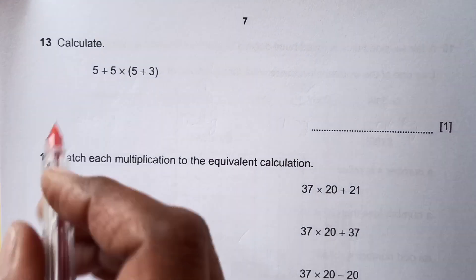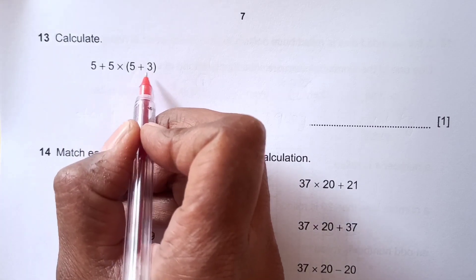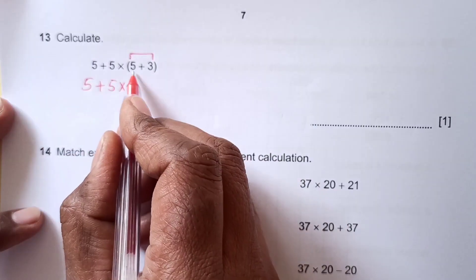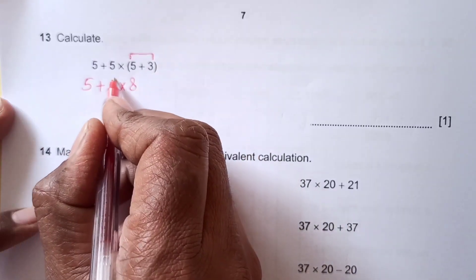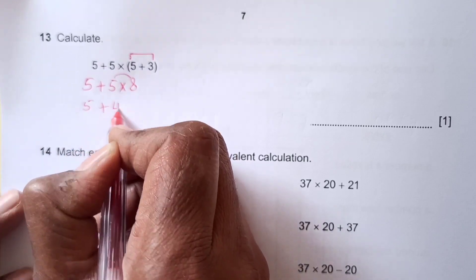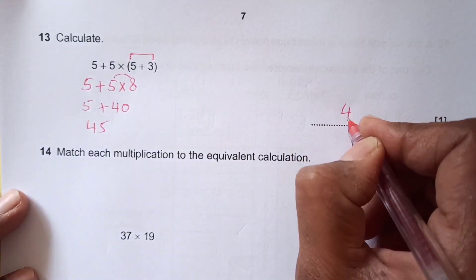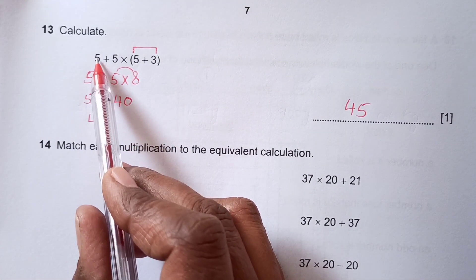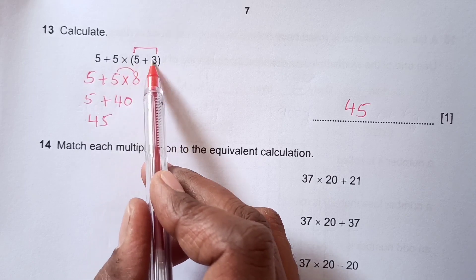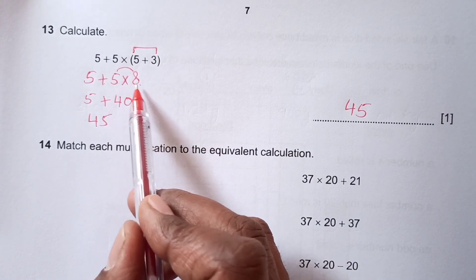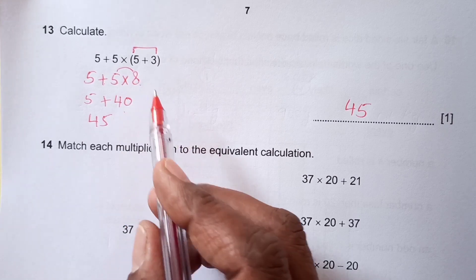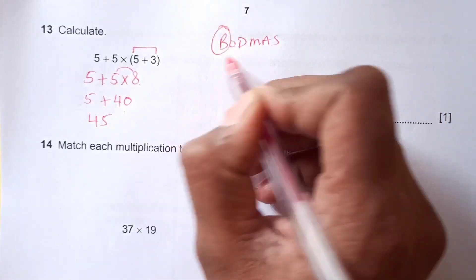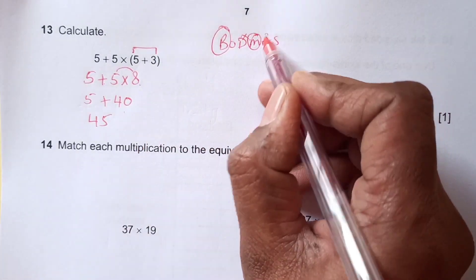Number 13, calculate this: 5 plus 5 times bracket 5 plus 3. We are going to solve first the bracket. 5 plus 3 is 8. Now the multiplication: 5 plus 5 times 8 is 40. Then it is 45. We have used BODMAS rule here. First of all the bracket, in the next step then multiplication which is 40, then 45. BODMAS: we first use bracket, there is no division, then multiplication, then addition.